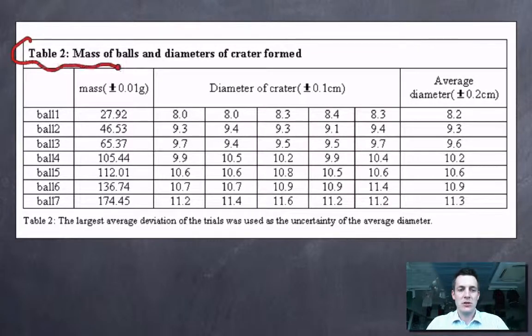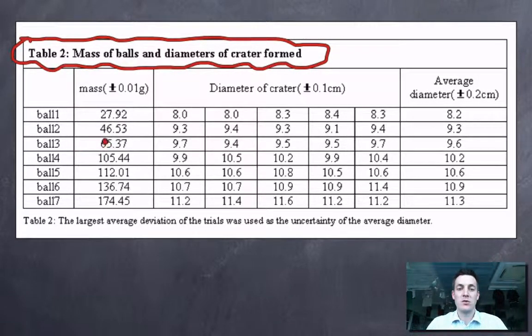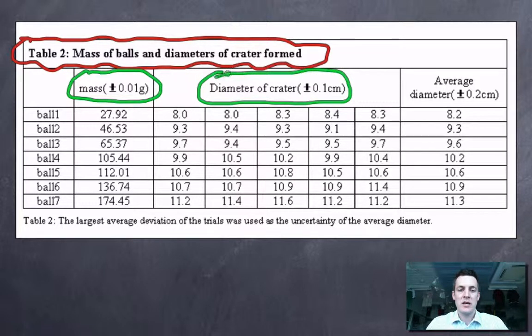It's got a nice clear title, so the title tells us what's in the table. It's also got column headings. What's really useful about these column headings is not only telling us what the quantity is about but giving us a unit for each of those quantities, so we're not seeing units dotted throughout our table. You'll also see that there is an absolute error for every one of these readings quoted in the column heading.